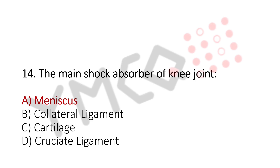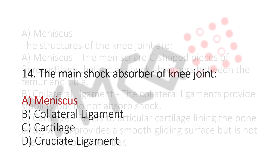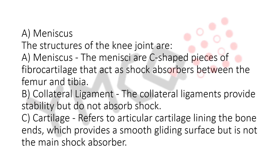Explanation for this question is: the structures of the knee joint are — A. Meniscus: the meniscus are C-shaped pieces of fibrocartilage that act as shock absorbers between the femur and tibia.